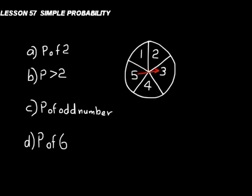What's the probability of landing on a 2? What's the probability of landing on a number greater than 2? In C, what's the probability of it landing on an odd number? And D, what's the probability of it landing on a 6? If you want to pause the CD and see if you can figure those out, you can.